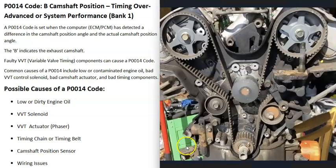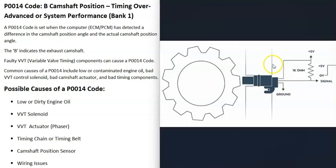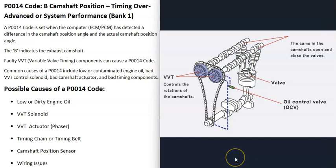Engines have different timing components. The engine is going to have a timing belt or timing chain with timing marks to keep the camshafts and the crankshaft all aligned. There's also going to be a camshaft position sensor and a crankshaft position sensor monitoring everything as it spins and reporting this information back to the computer.